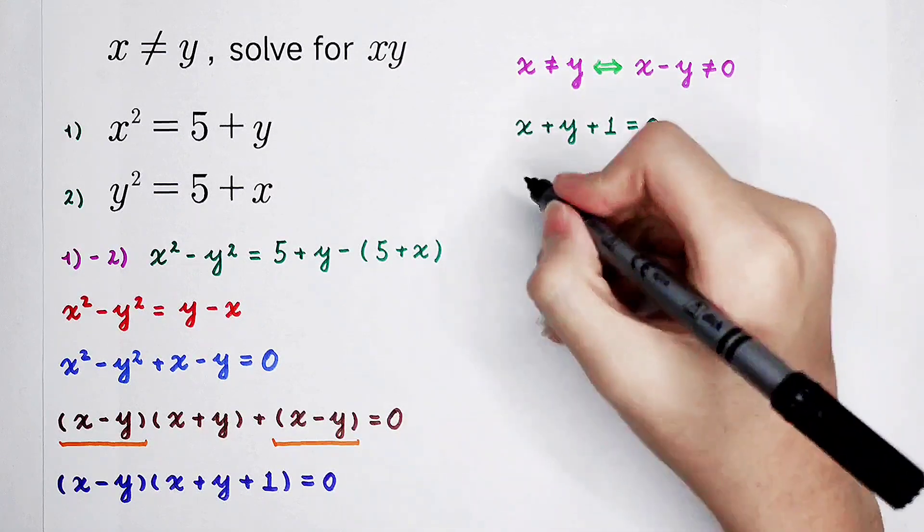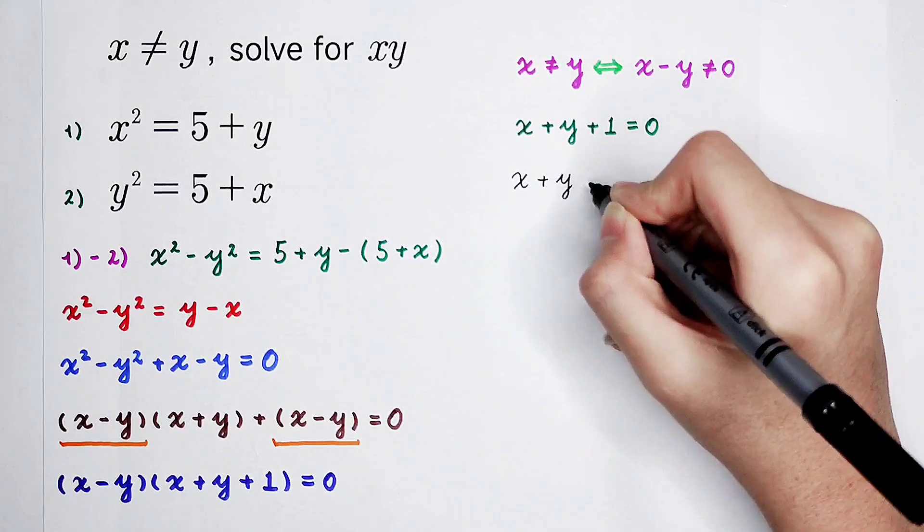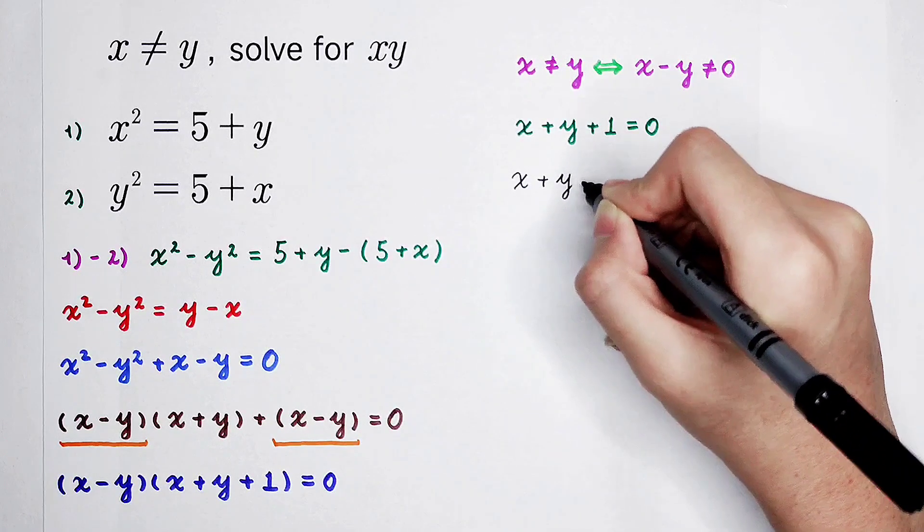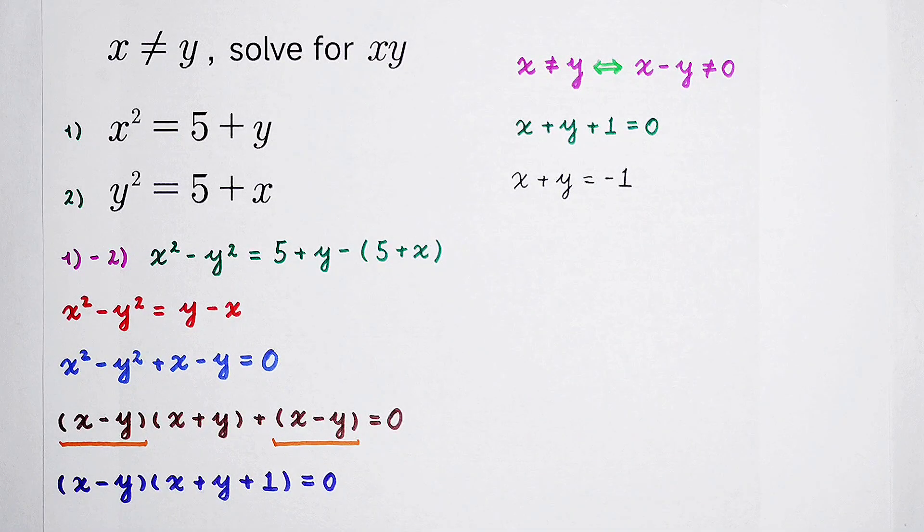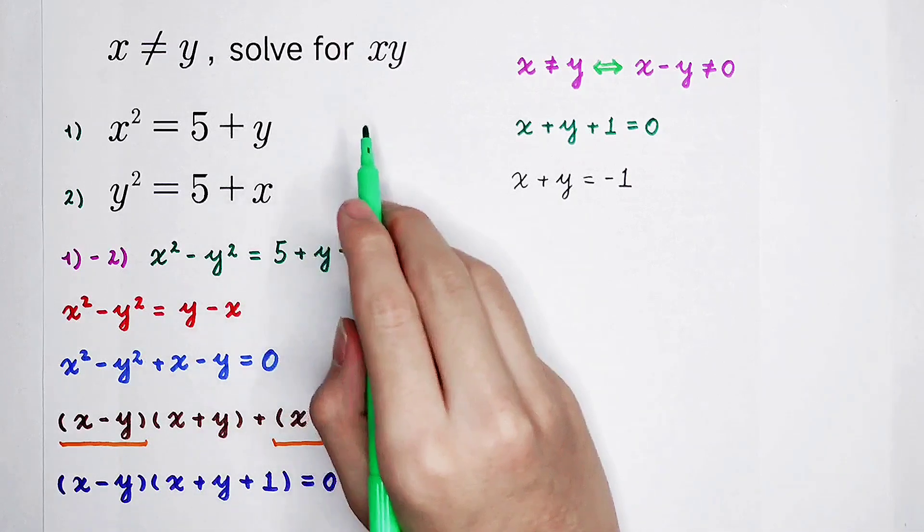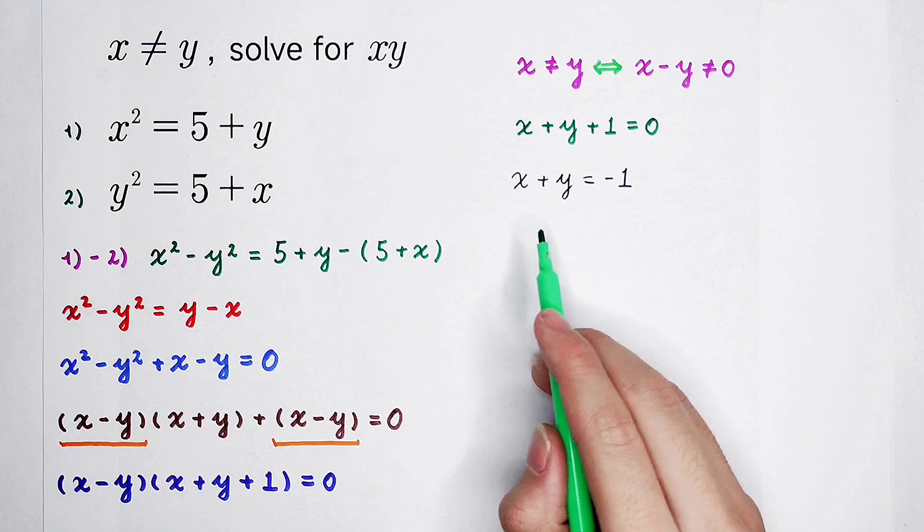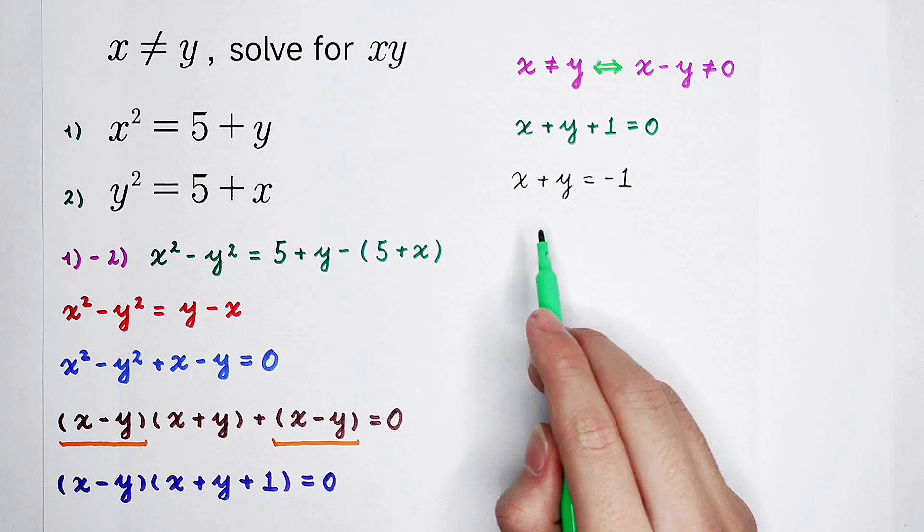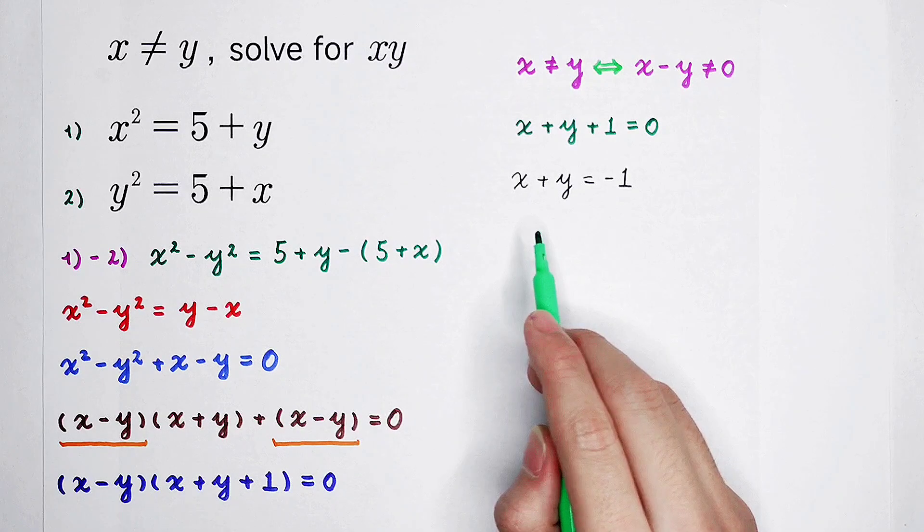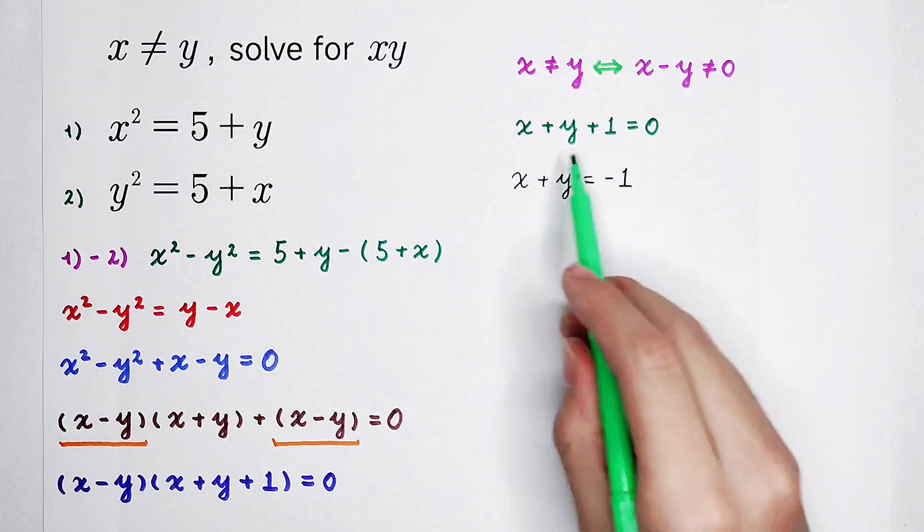So, x plus y plus 1 is 0. Now, subtract 1 from both sides, and x plus y is negative 1. We have to solve the value of x times y, not x plus y. So, what should you do? If you want to get the multiplication of x and y, what should you do on this term?